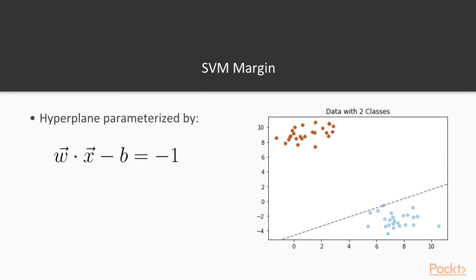And we can parameterize this line by the vectors w dotted with x minus b equals negative one. This is the constraint that defines this hyperplane or in this case, this line. Next, we find the line that separates the other class but cutting it as close as possible. And as you can see, it intersects this point. And these points are called support vectors. And this is where the support vector machine naming comes from.